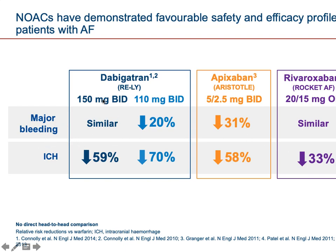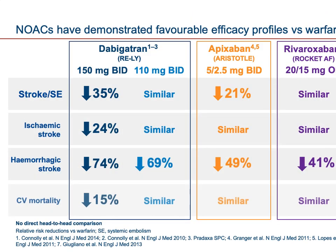For major bleeding, both the 110 and 150 milligram doses of dabigatran showed similar bleeding risk. However, when comparing with the ARISTOTLE trial for apixaban, the bleeding risk was notably higher. For intracranial hemorrhage — a significant side effect of anticoagulants — there is a significant difference favoring dabigatran versus apixaban and other newer entrants.